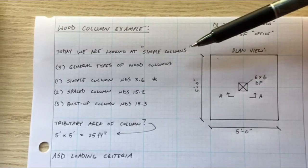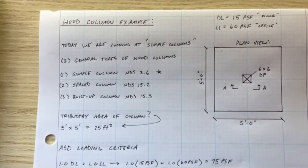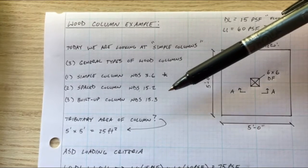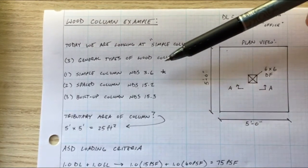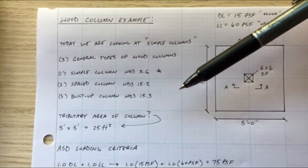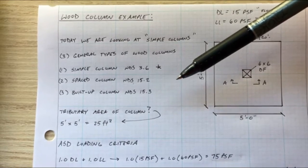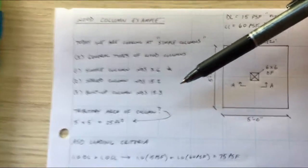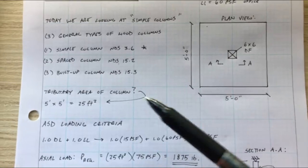We are going to be talking about simple columns and there's generally three types of wood columns. You have a simple column which is defined in NDS 3.6, you have a spaced column which is NDS 15.2, and then you have what's called a built-up column which is NDS 15.3. We are just going to be doing a simple column today. You also have tapered columns where it's thicker at the bottom and skinnies up towards the top or vice versa, and you also have round columns and tapered round columns. So there's more in there but these are the three main ones. I have it right here next to me in the NDS. Depending on what type of column you have you want to go to these sections and start from there, but we're going to go to 3.6.